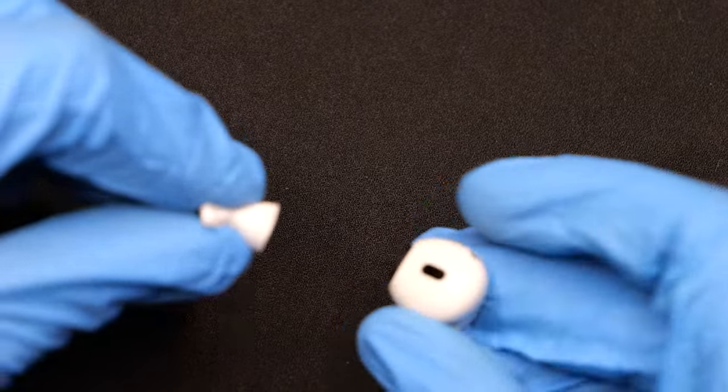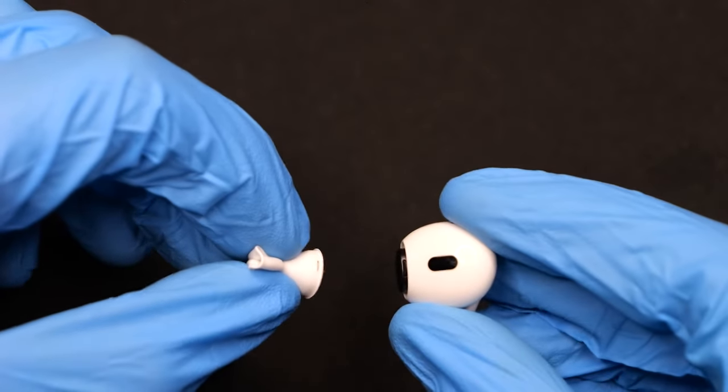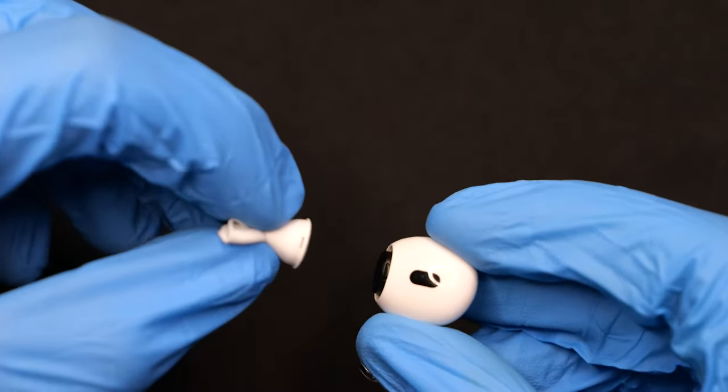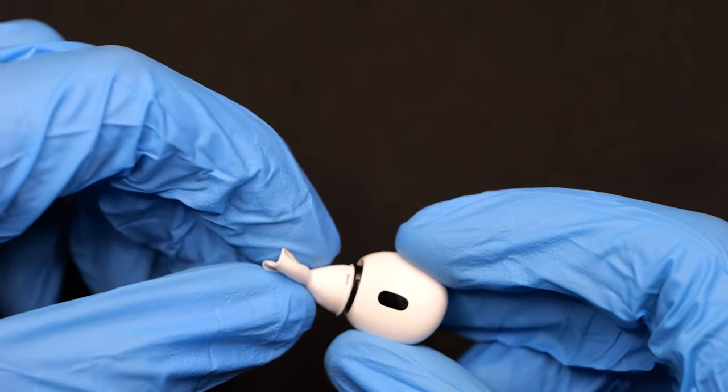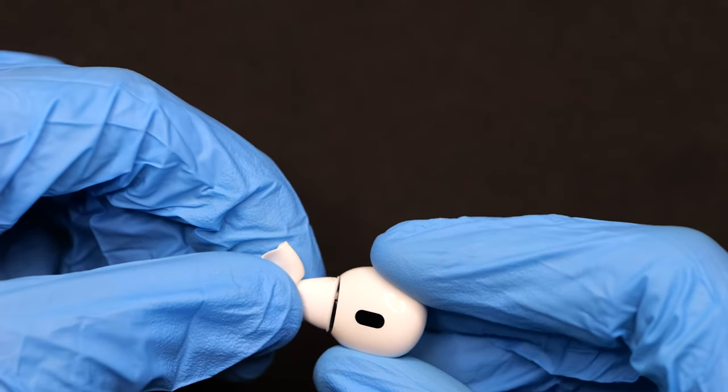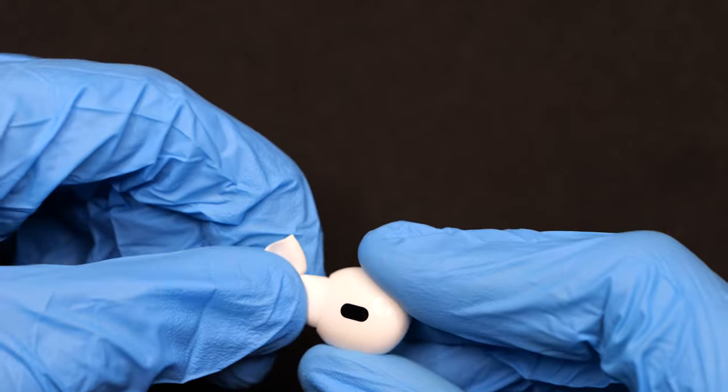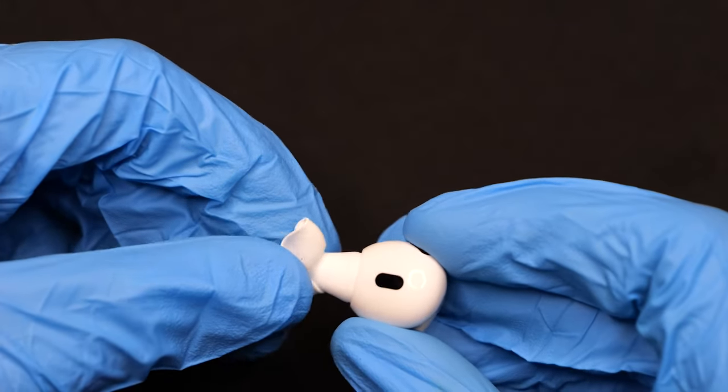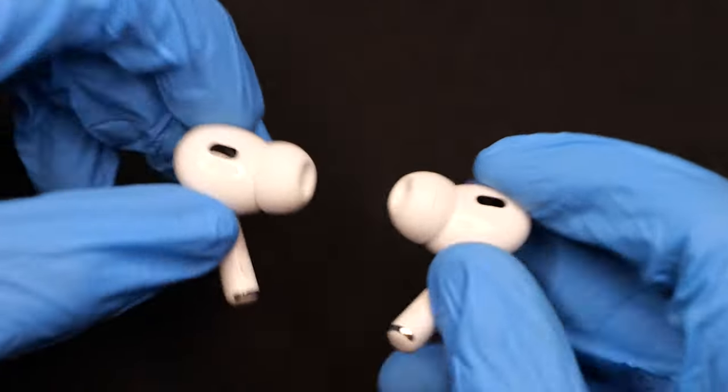And then same process for the second one. Once again, align that notch on the AirPod. Align it on the ear tip, turn it so that the empty side is facing the notch on the AirPod. And then just click it into place. And then flip that back out. And there you have it.